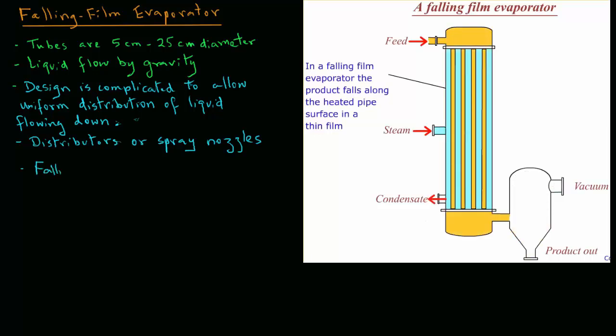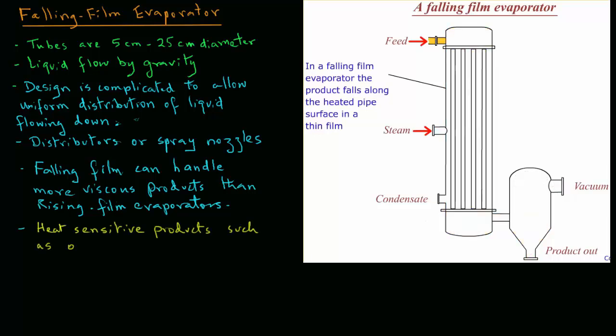The falling film evaporators can handle more viscous products than the rising film evaporators because here the flow is mainly by gravity. Typically, heat sensitive products such as orange juice concentration is done in these types of evaporators.